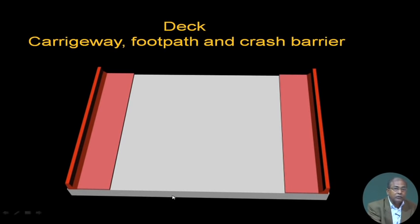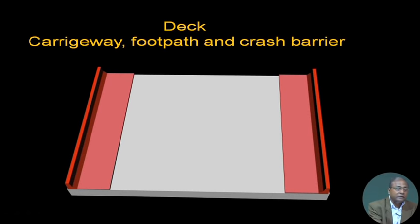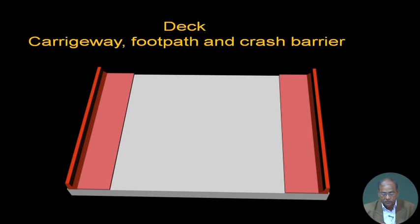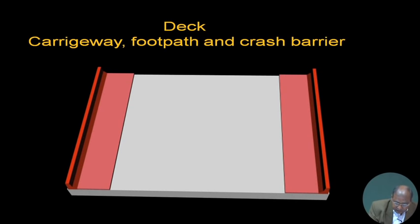Our objective is to understand the direction of vehicle movement. The vehicle is moving in a particular direction, and that direction is what we call the span of the bridge. Whenever we consider the span of the bridge, the first thing we consider is the span itself.